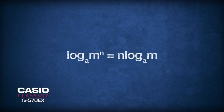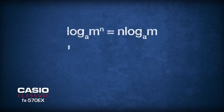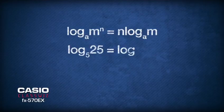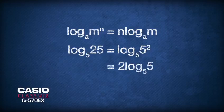Using this given formula from the formula list, logarithm base 5 of 25 can be written as logarithm base 5 of 5 squared and can be simplified to become 2.